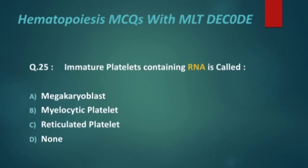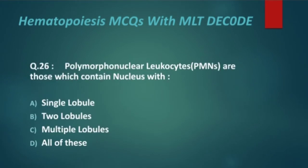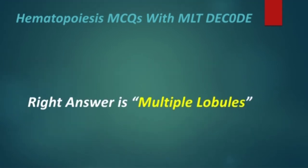Next: immature platelets containing RNA are called? Options are megakaryoblast, myelocytic platelets, reticulated platelets, and none. The right answer is reticulated platelets. Next: polymorphonuclear leukocytes are those which contain a nucleus with options: single lobule, two lobules, multiple lobules, and all of these. The right answer is multiple lobules.